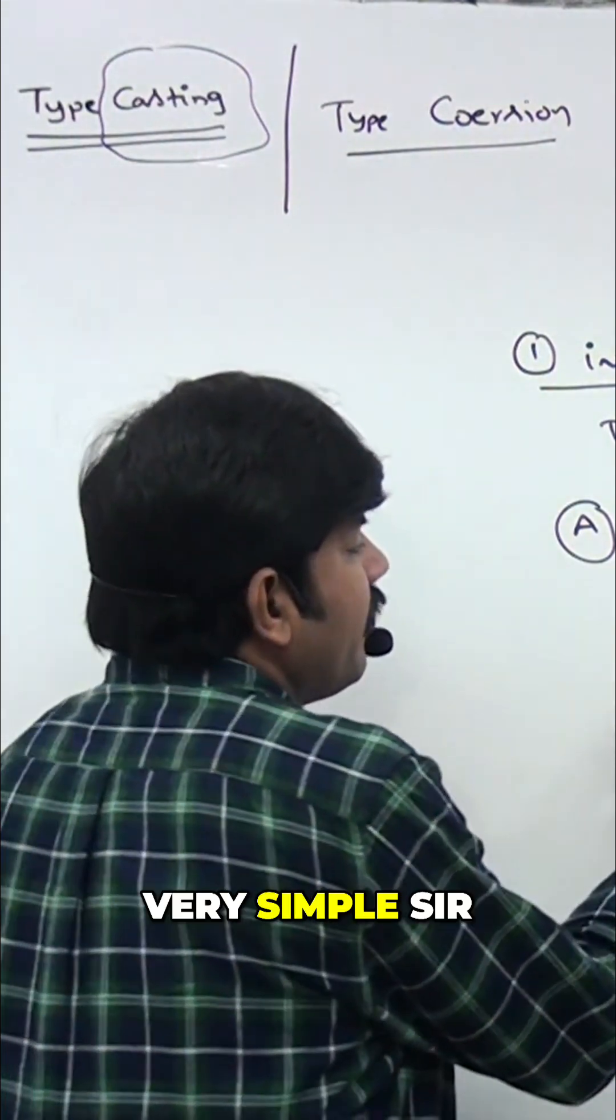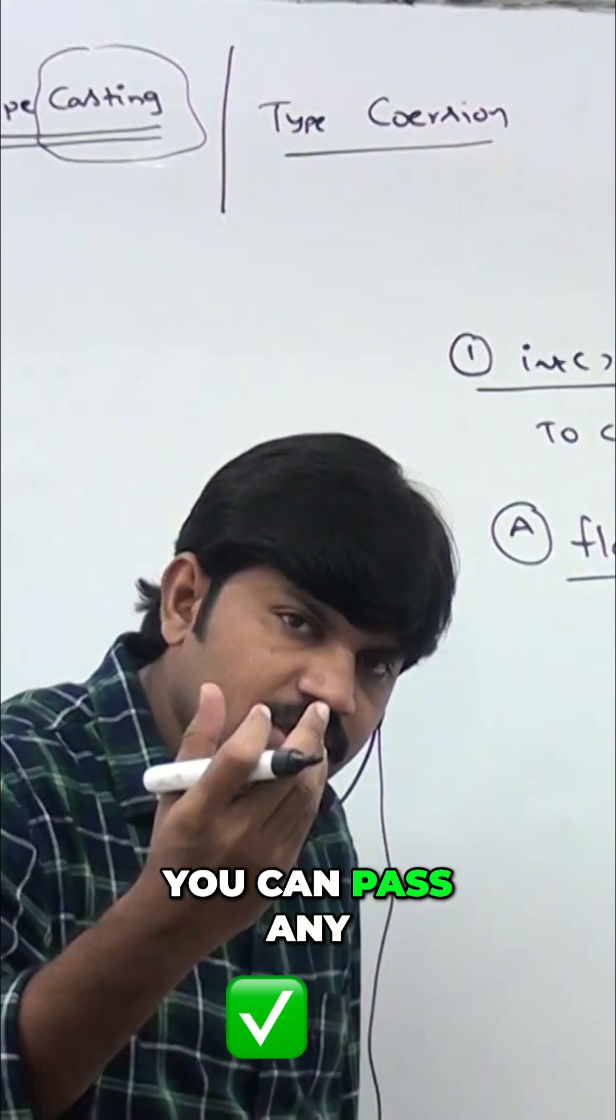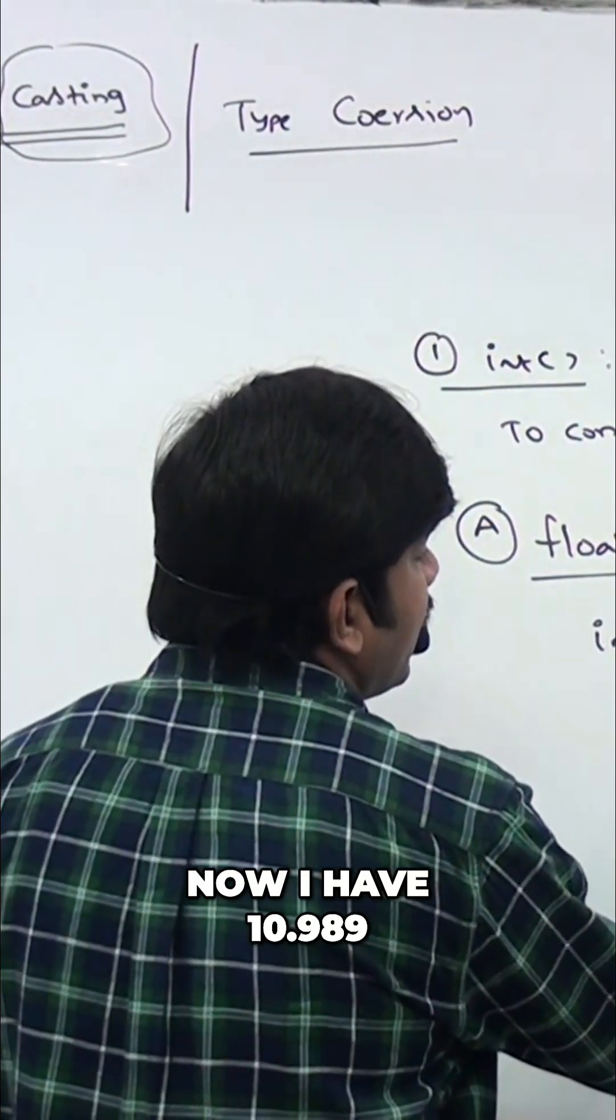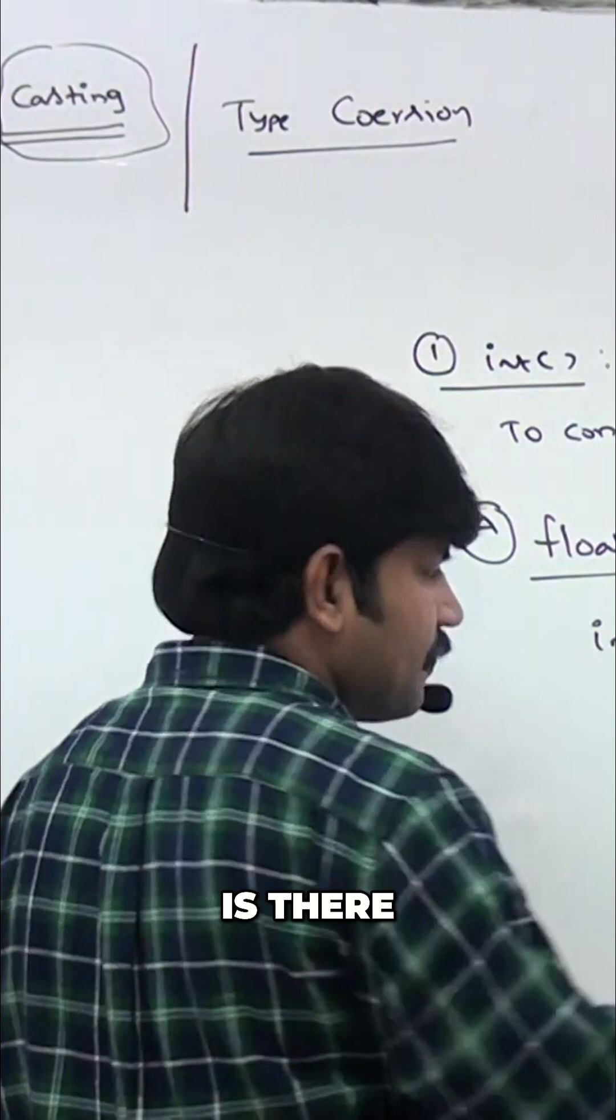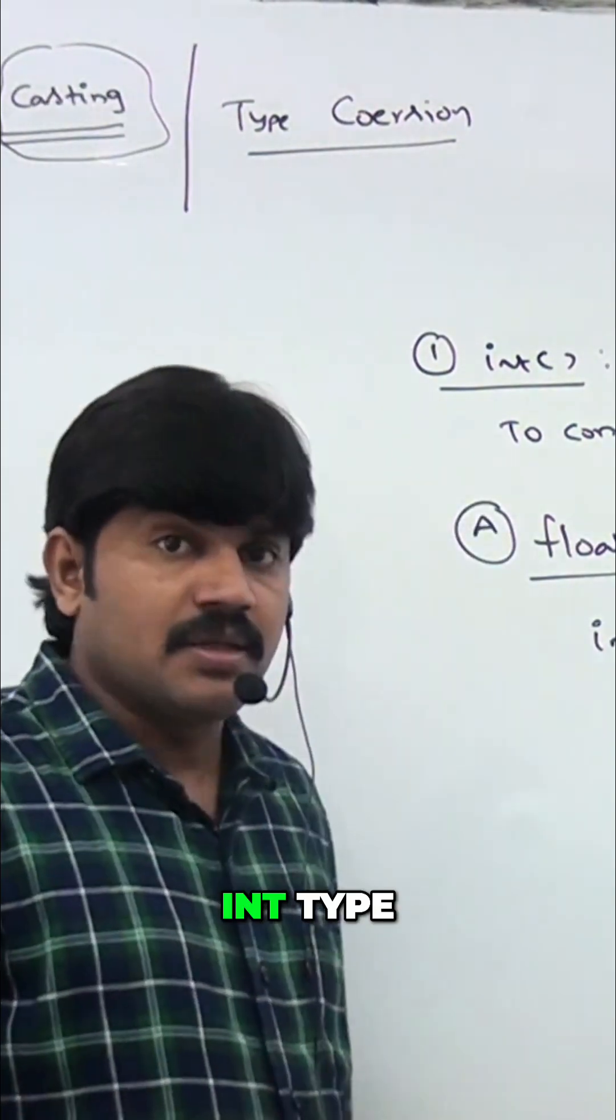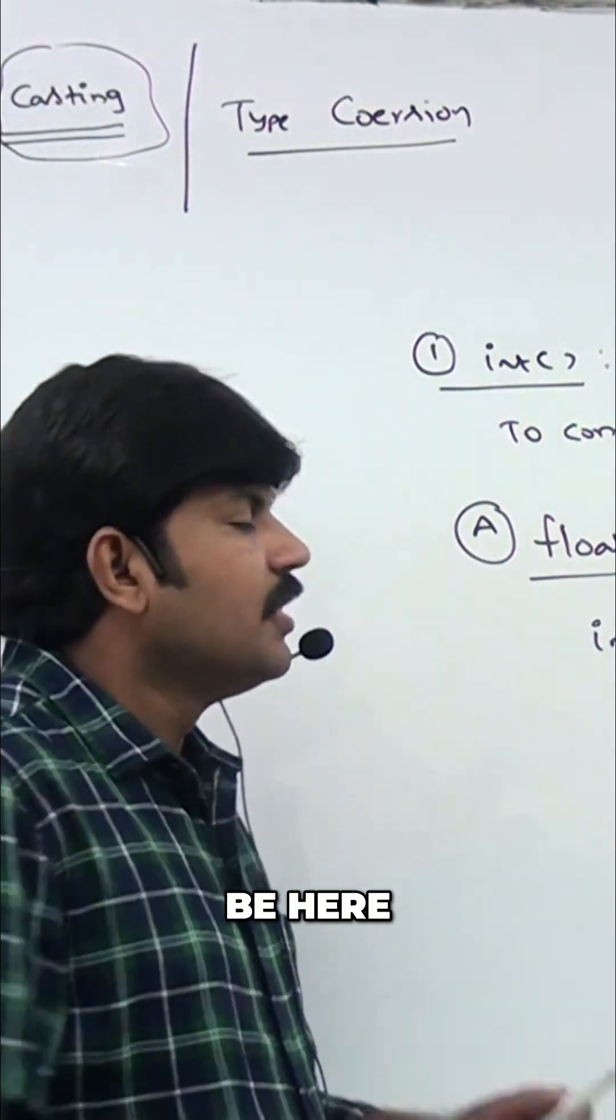What is the option? Very simple - int of you can pass any float value, no problem. Now I have 10.989, this is the float value. I want to convert this float value to int type. What will happen? How is this int function going to behave here?